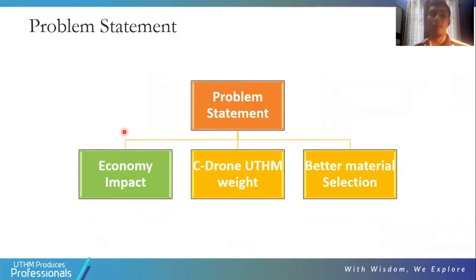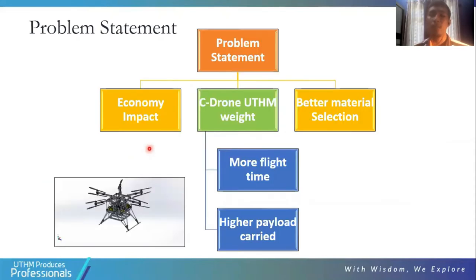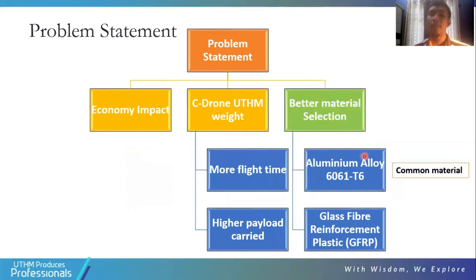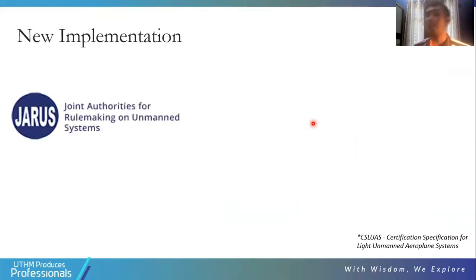The problem statement consists of three parts: economic impact, weight reduction, and material selection. In terms of economic impact, a statement by DK ICR in 2020 shows Malaysia is looking for opportunities to use drones in many fields by 2025. For weight reduction, reducing the structural weight can contribute to more flight time and higher payload capacity. The current structural material is aluminium alloy 6061, and this research will try to substitute it with glass fiber reinforced plastic (GFRP) to reduce the weight of the structure.